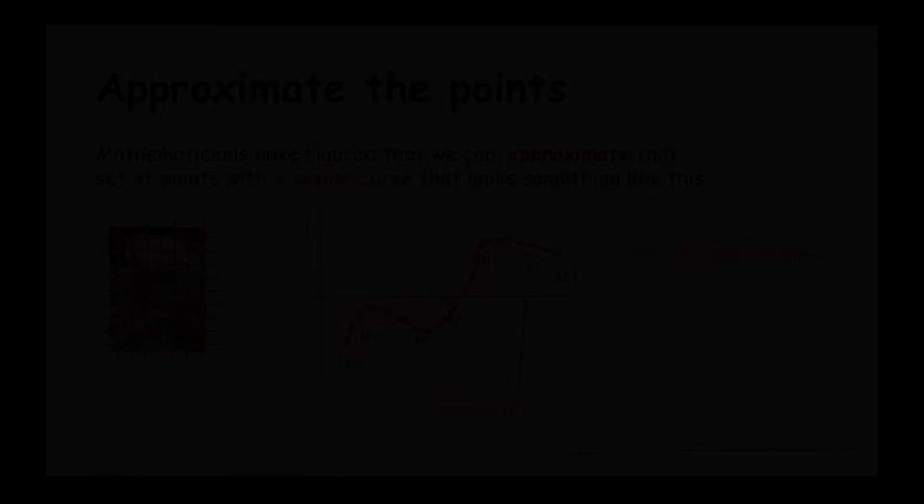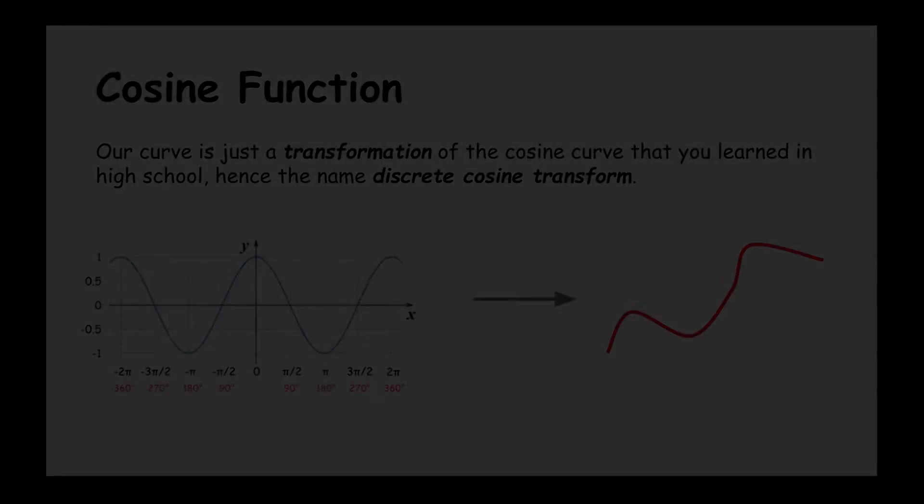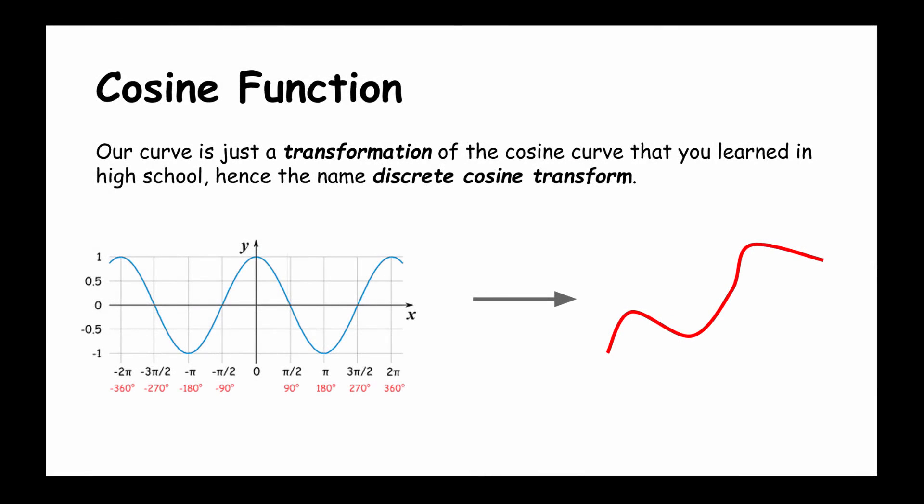Then we're going to do the math magic. The math uses a cosine curve to model or approximate the set of points shown on the graph. Here's an example. Suppose this red curve shown here is represented by this expression that involves the cosine of x. Our curve is just the transformation of the basic cosine curve that you learned about in high school math, hence the name of this approach being the discrete cosine transform.